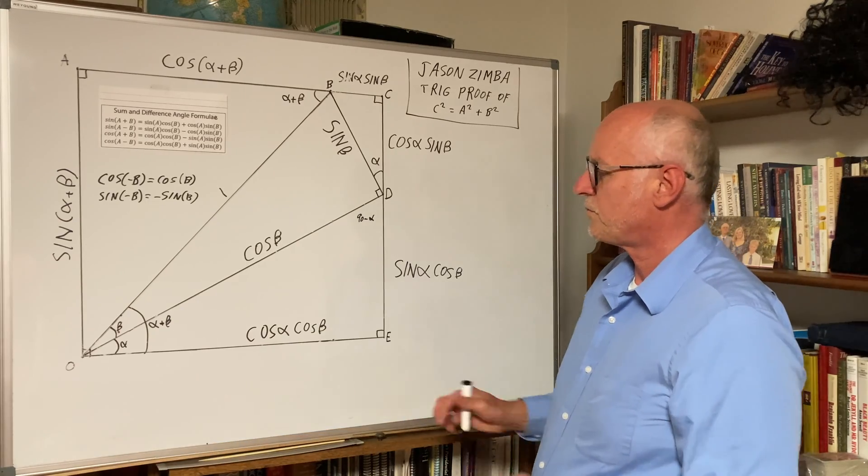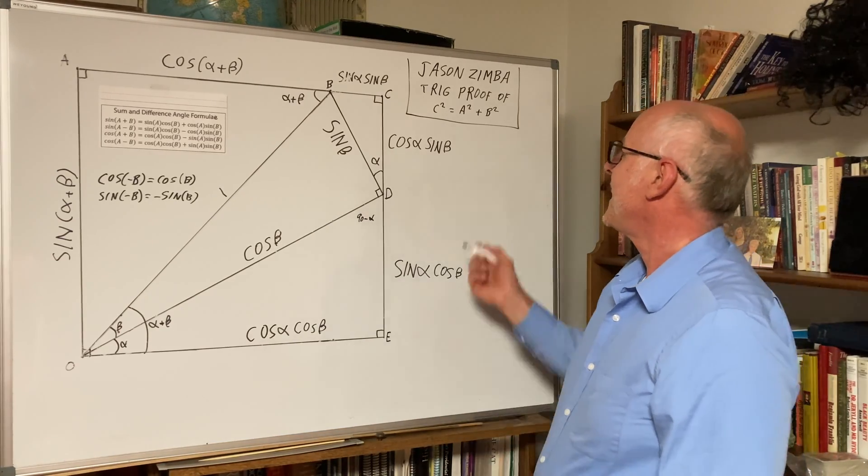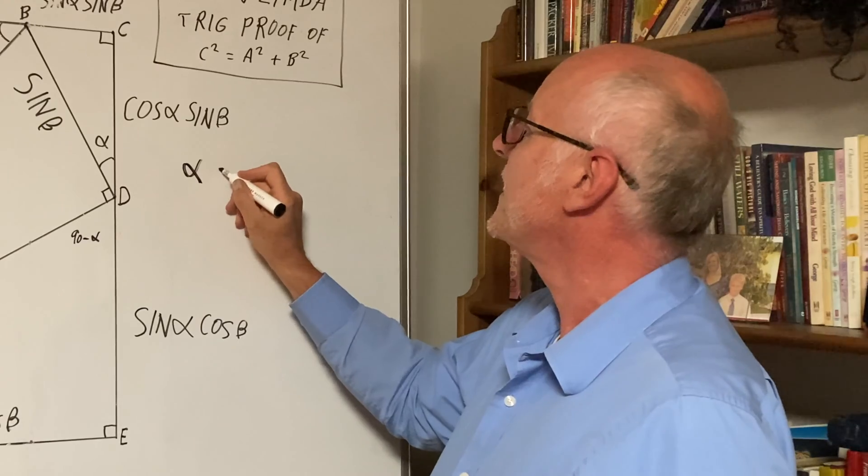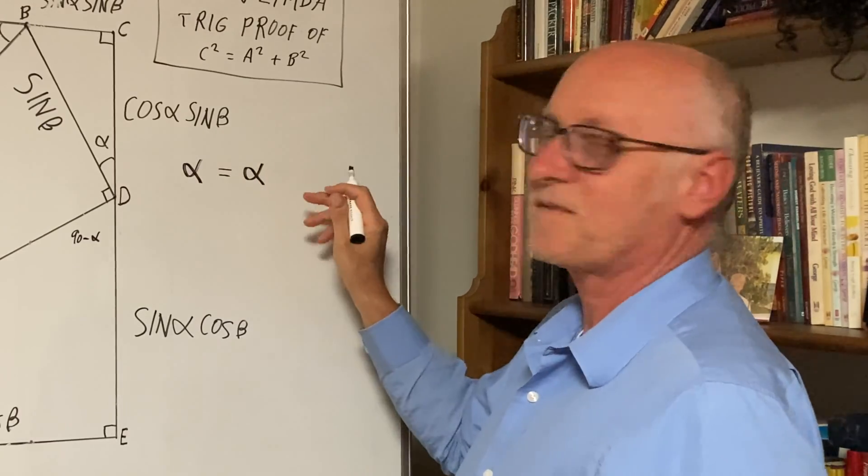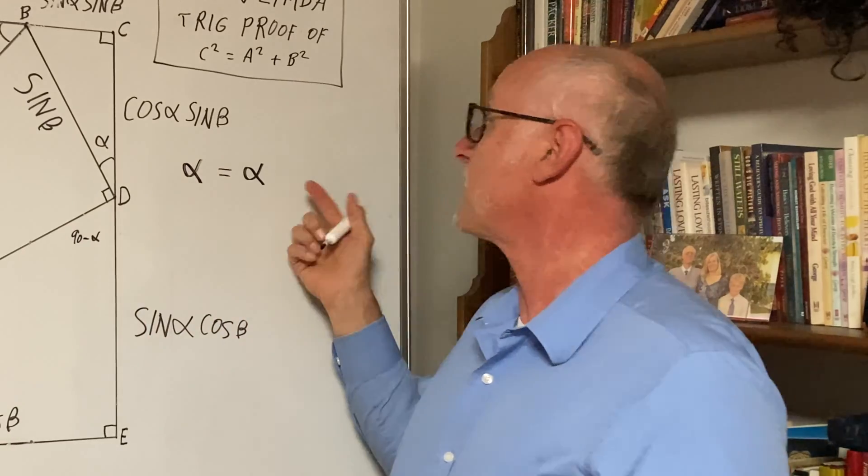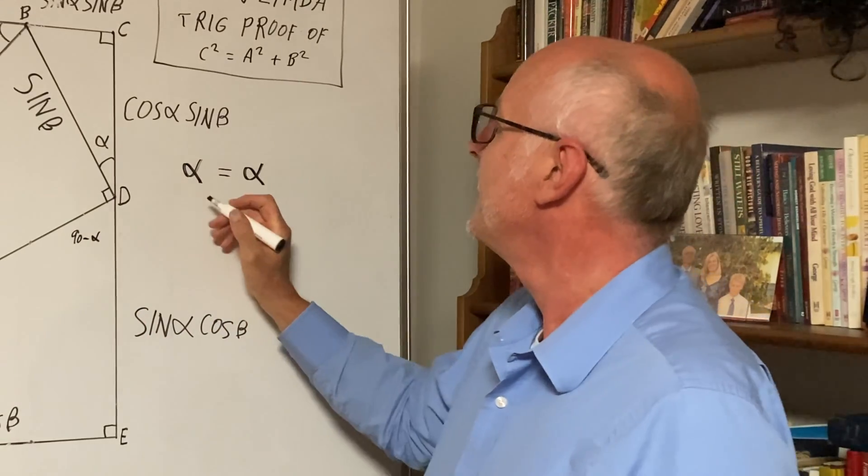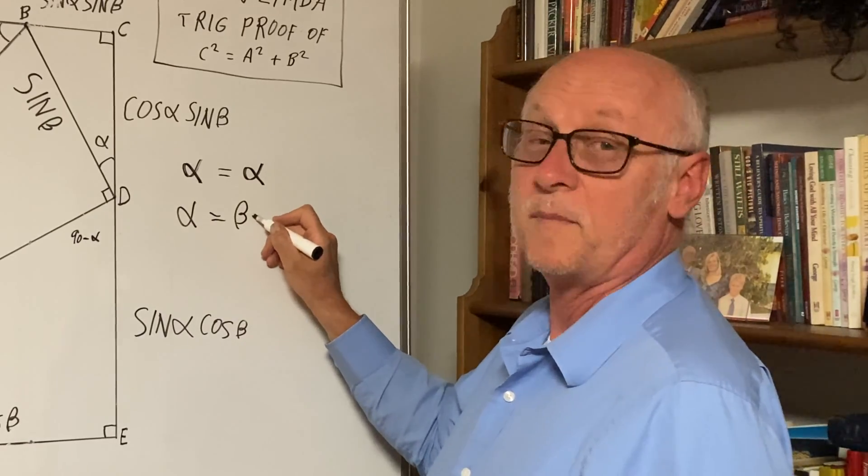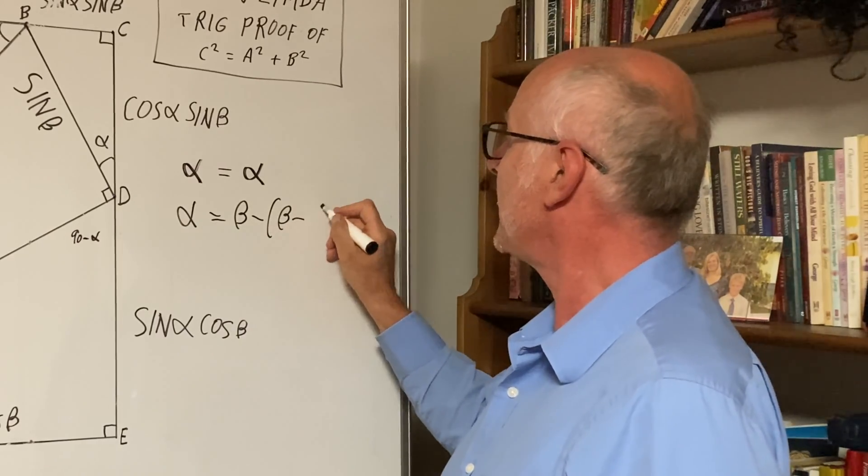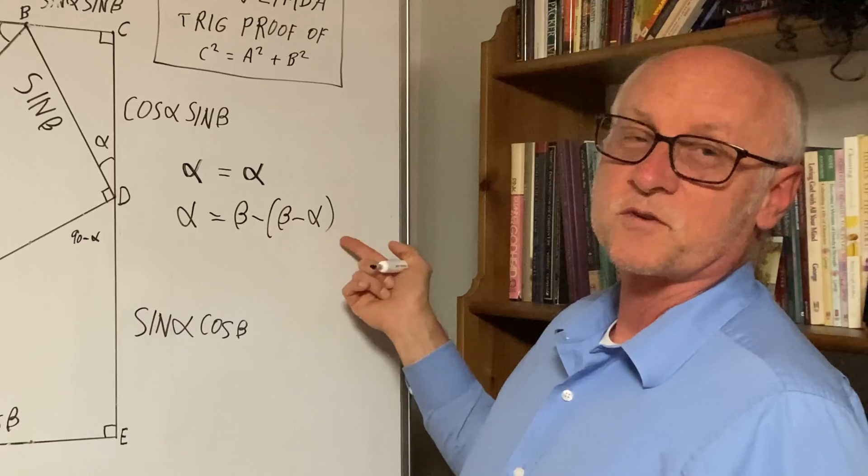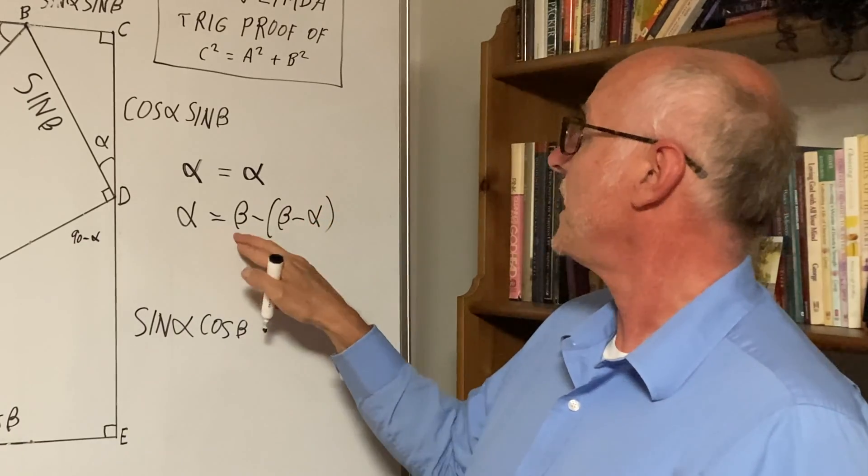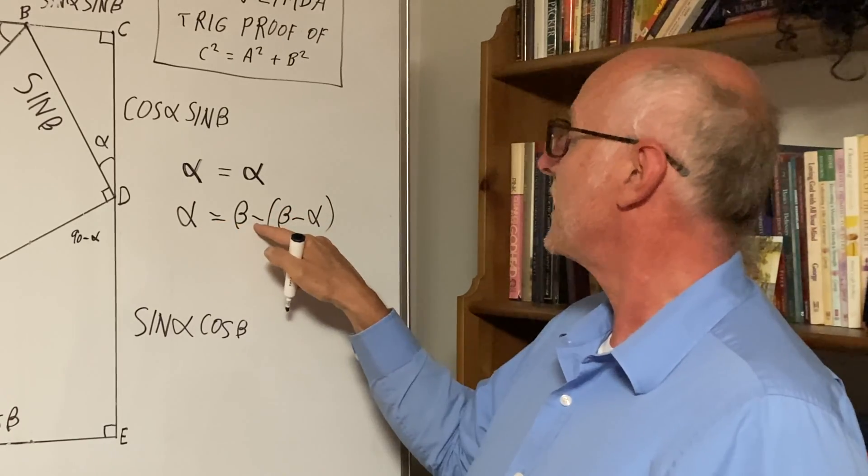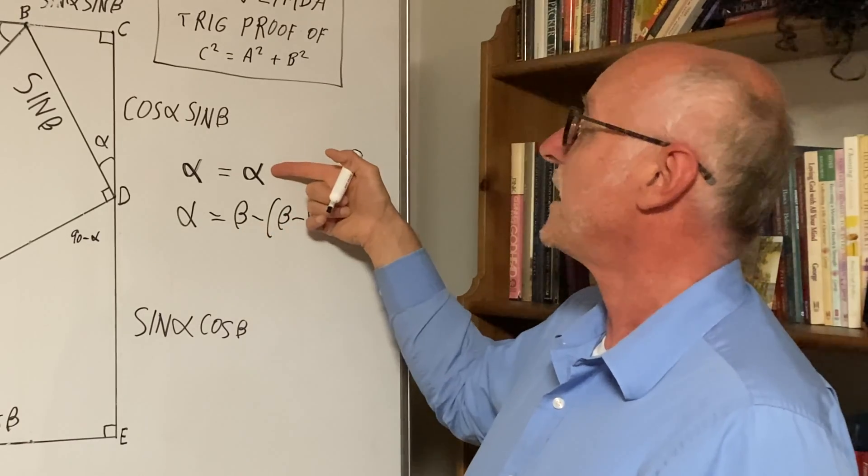We also need to prove a slight lemma. Here's the lemma. Alpha equals alpha. At first glance, this is kind of an obvious statement, but it's a true statement. Then we embellish it a little bit, and we say alpha equals beta minus beta minus alpha. This is also a true statement. It's really the same statement because beta cancels beta, and then the alpha negative here is canceled out by this negative sign, so it becomes a positive sign.